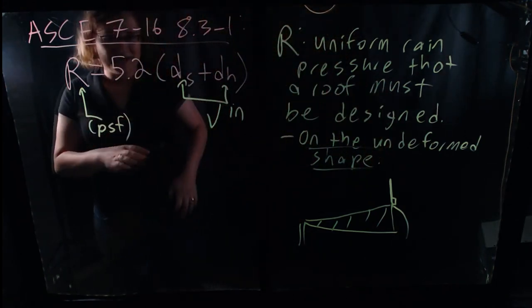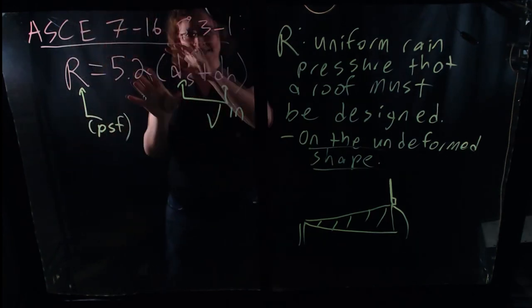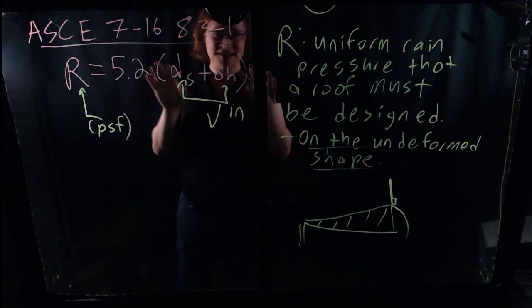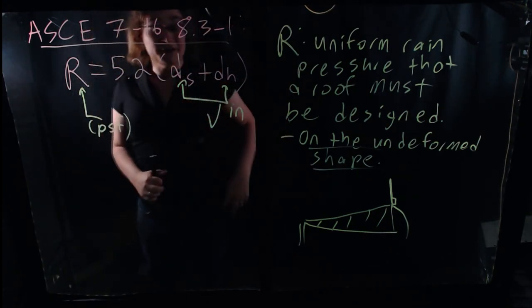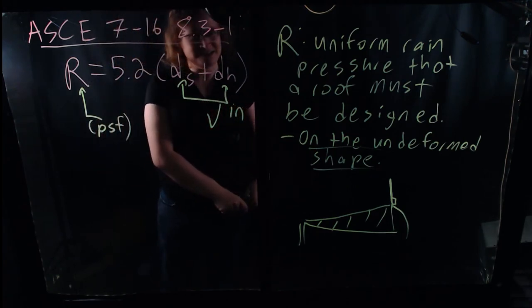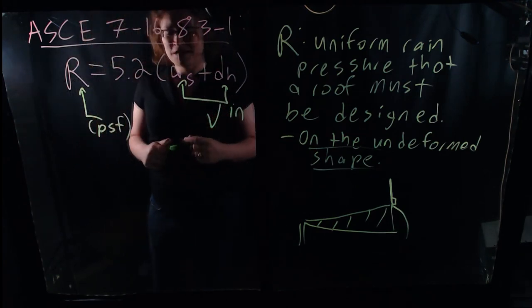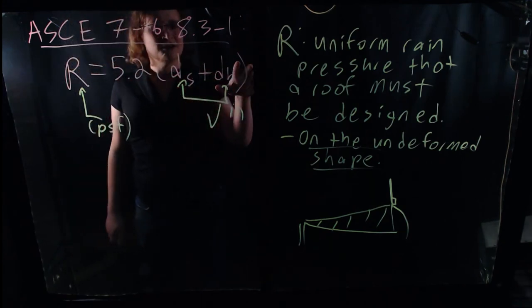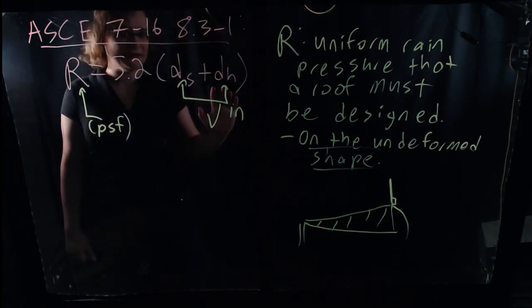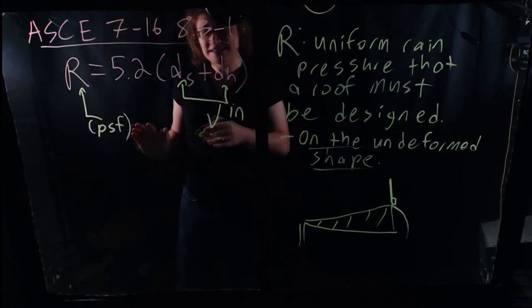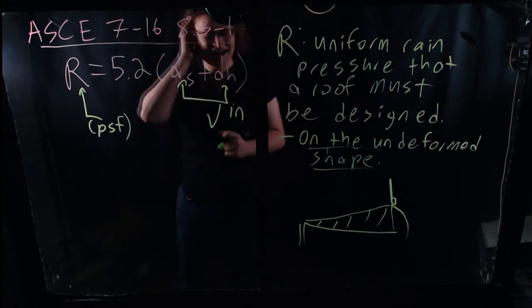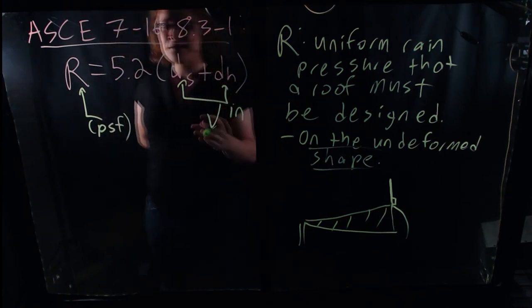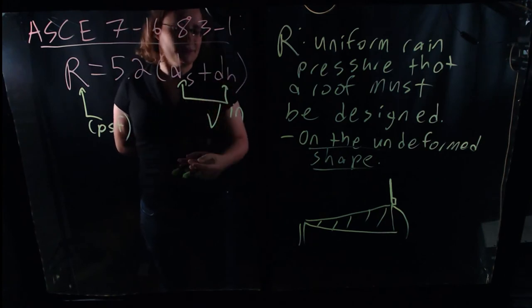Where does this mysterious 5.2 factor come in? Is this based on years of statistical analysis? Is this from a paper distilling down a hundred rain study papers? No. There are plenty of things like that in the ASCE 7 provisions — especially when you deal with seismic and wind load and other more complex types of loading. But rain load is probably one of the simpler types of loading. Rain is not fun to deal with if it ever leaks into your house — if you've ever had that problem after a hurricane, I know I have, it's not fun. But in terms of design, rain load is relatively simple compared to some other types of loading.